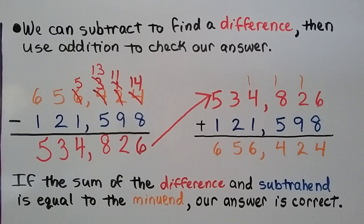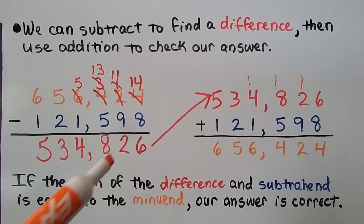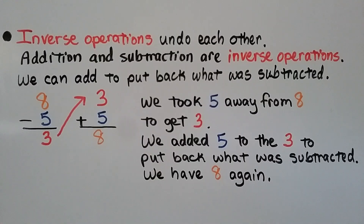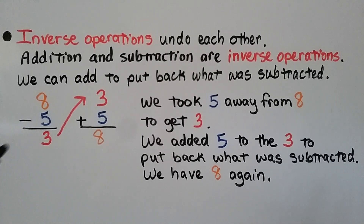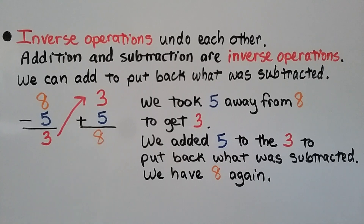If the sum of the difference and subtrahend is equal to the minuend, our answer is correct — we subtracted correctly. Remember, the answer in subtraction is a difference. Inverse operations undo each other: addition and subtraction are inverse operations. We can add to put back what was subtracted. 8 minus 5 equals 3. We took 5 away from the 8 to get 3, then added 5 back to the 3 to put back what was subtracted, and we have 8 again.